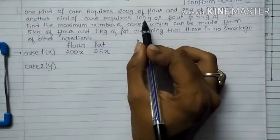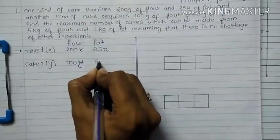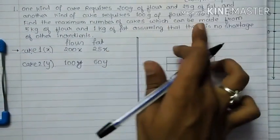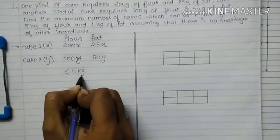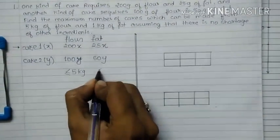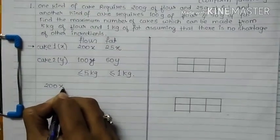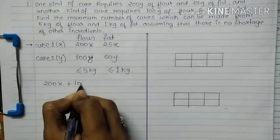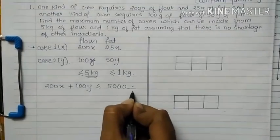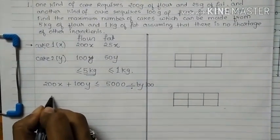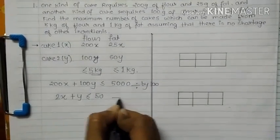Another kind of cake requires 100g of flour and 50g of fat, which gives us 100y and 50y. To find the maximum number of cakes from 5kg of flour, flour can be used less than or equal to 5kg. So my first equation becomes 200x plus 100y less than or equal to 5000g. Dividing by 100, I get 2x plus y less than or equal to 50. This is equation 1.